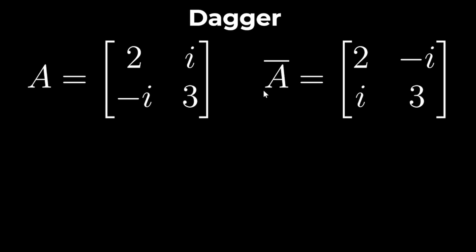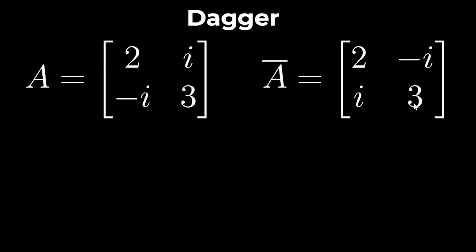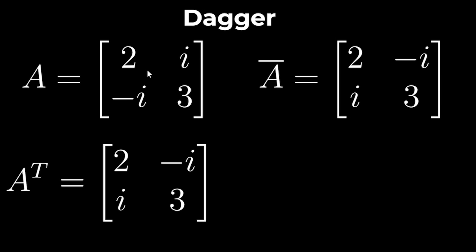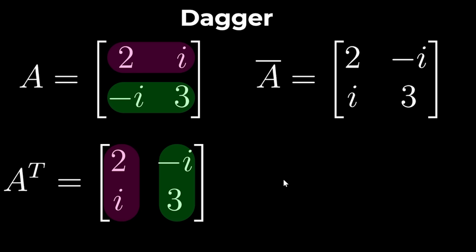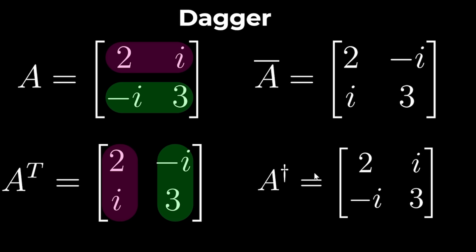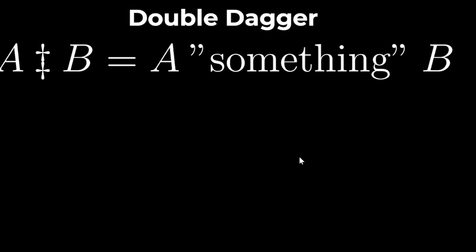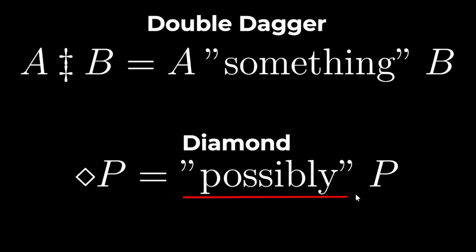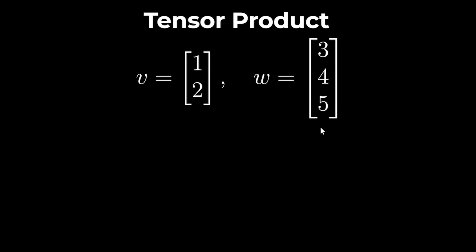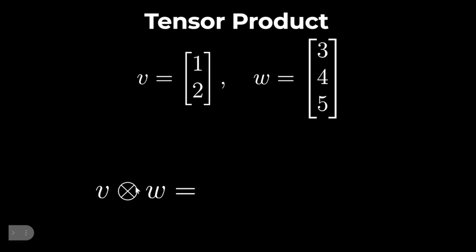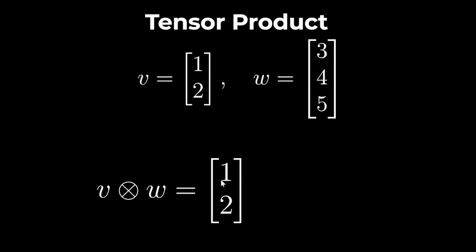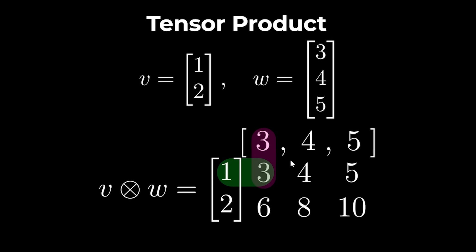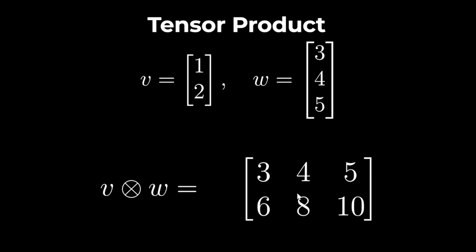So if A is this 2x2 matrix here, then the conjugate of A is the complex conjugate of each of the values in A, and A transposed is what happens when you take the rows of matrix A and turn them into columns. A dagger is what happens when you do both, and it doesn't matter which way around you do them. Double dagger is used as a custom operation, and it can mean anything, and diamond P is possibly P. If V is the vector 1, 2, and W is the vector 3, 4, 5, then to find the tensor product of the two vectors, you lay the first vector along the side, and the second along the top, and then multiply the rows by the columns to find the cells in the resulting matrix.